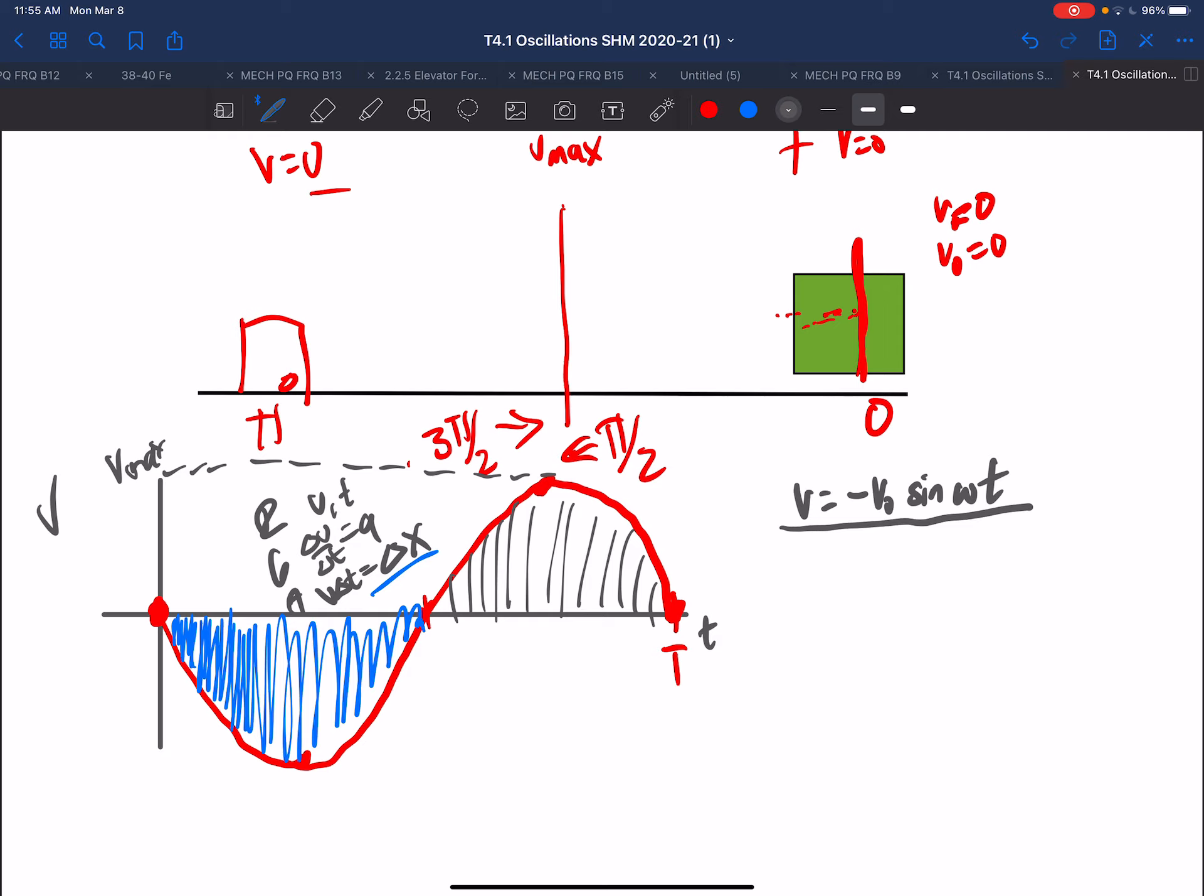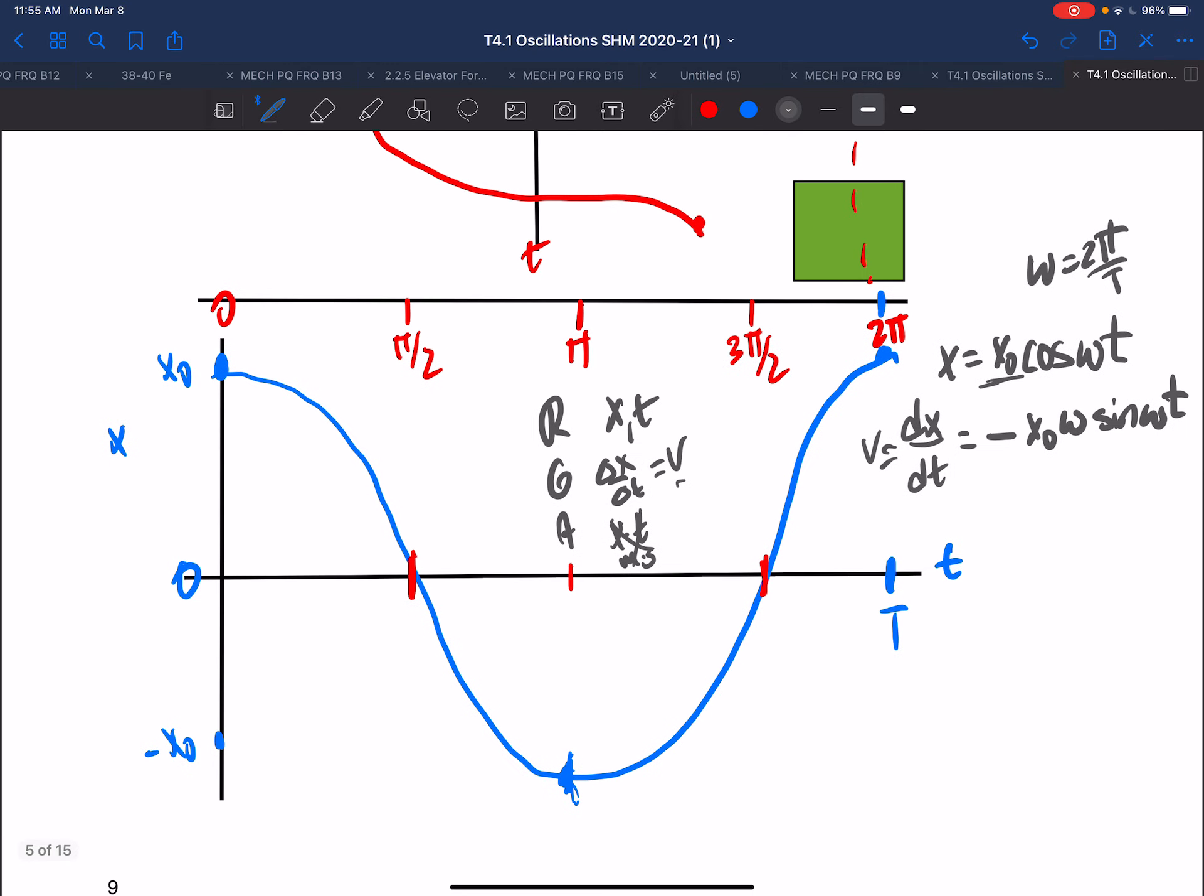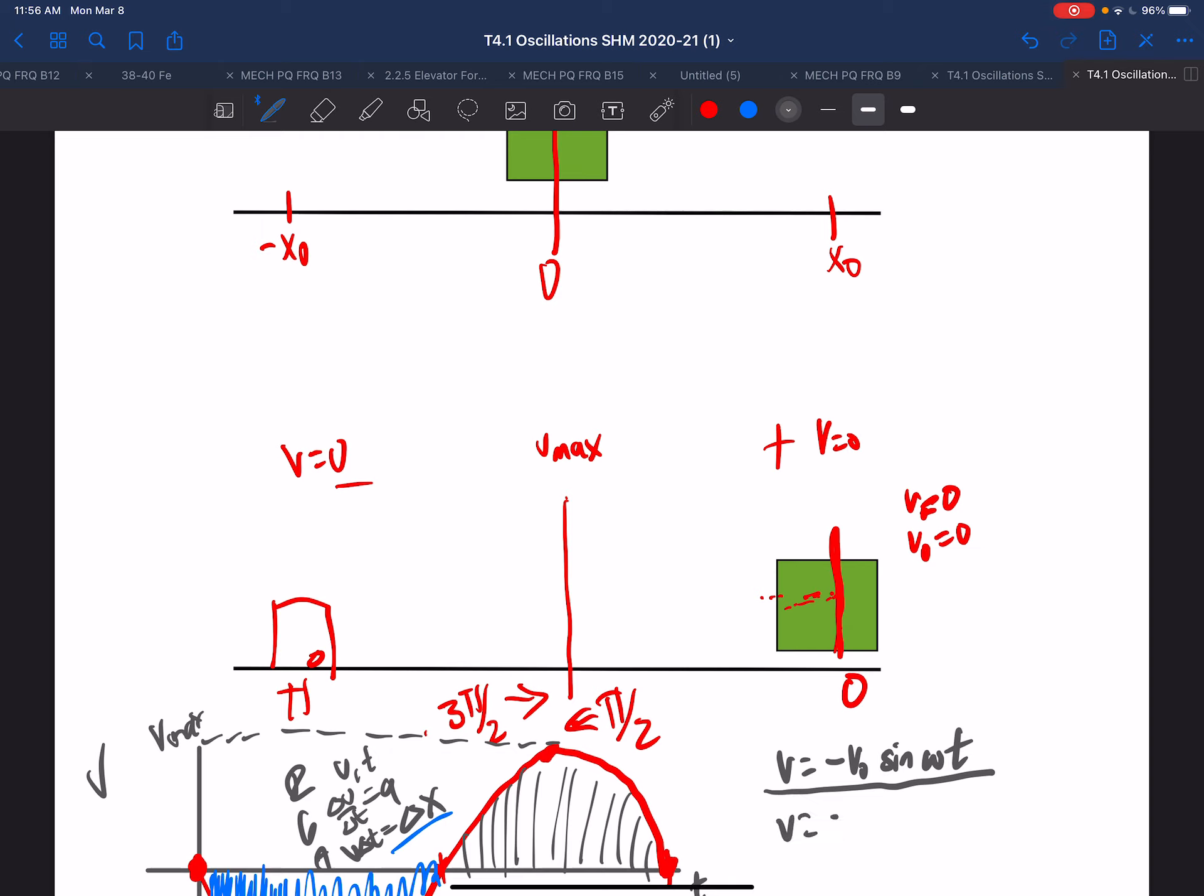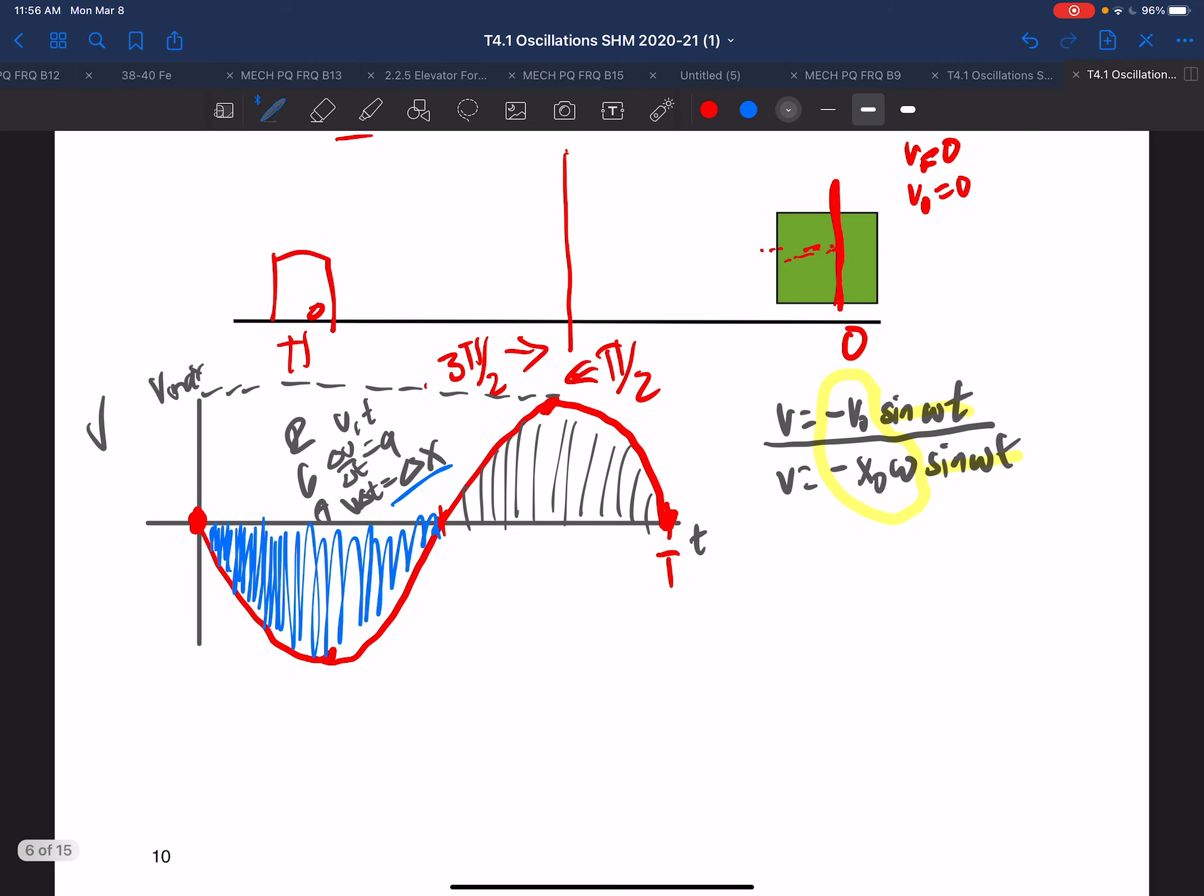Now, I want to point out that we said here that from the graph v equals minus v₀ sine ωt. But when we did the calculus thing, we had minus x₀ω sine ωt. So we can see these two sine ωt's. And if they both equal v, then these two must be equal to each other. So, minus v₀ must equal minus x₀ω, and therefore v₀ equals x₀ω. So that's another thing to know, and we can arrive at our values of the graph.